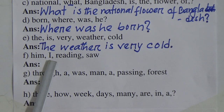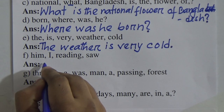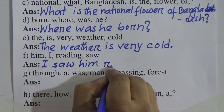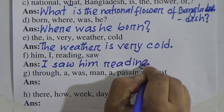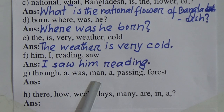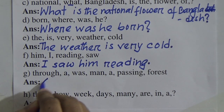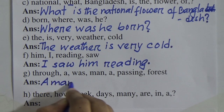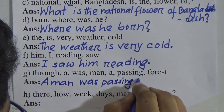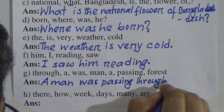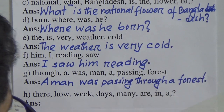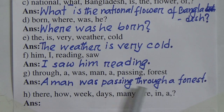Number F: 'him, I, reading, saw.' Here the subject is I, then verb: saw, then the object: him. I saw him reading. Reading is a present participle here. Number G: 'through a was, man, a passing forest.' Here the subject is a man, verb is was — a man was passing — past continuous tense — through a forest. Full stop. Assertive sentence: a man was passing through a forest.